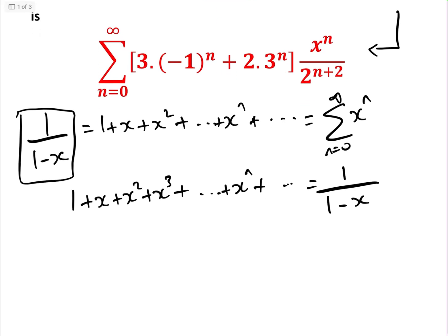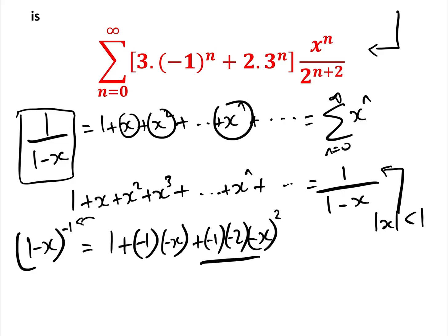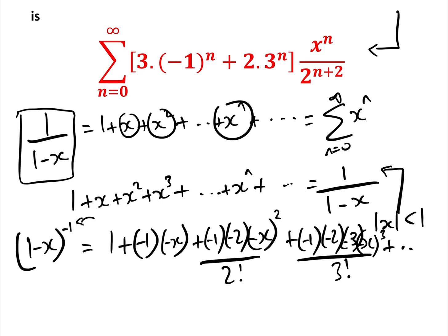The second way is using the binomial expansion. We write 1 minus x to the minus 1. Note that this is valid for mod x less than 1, because if x were bigger than 1, each term would get bigger and it wouldn't converge. The binomial expansion gives us 1 + n(−x) + n(n−1)x²/2! + n(n−1)(n−2)x³/3! + ..., and all the negatives cancel out, giving 1 + x + x² + x³ + ...